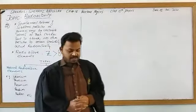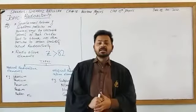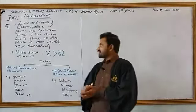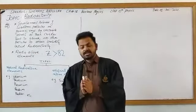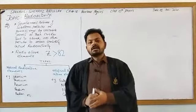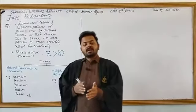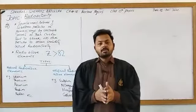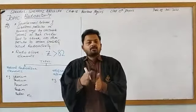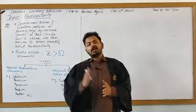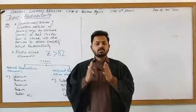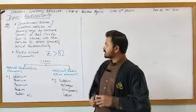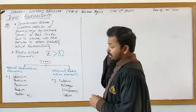Today we are going to discuss number 18 nuclear physics, and the topic of our discussion is radioactivity. Radioactivity is that process in which an unstable nucleus releases some energy in the form of subatomic particles or in the form of rays to get stability — that process in which an unstable element releases energy to attain stability is known as radioactivity.